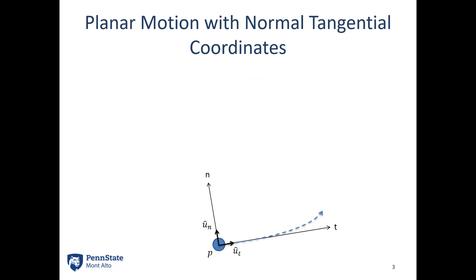Getting into the normal tangential coordinate system: we have some origin point and some point P, and we are the origin point, so position is actually going to be zero. We set up a coordinate system such that the direction we're currently traveling in — thinking about our car example, if I look out the front windshield — that's the T direction, and the normal direction is always 90 degrees counterclockwise from that. So our position is zero in both the N and T directions; we are the origin point.